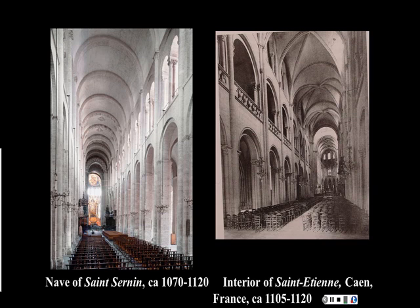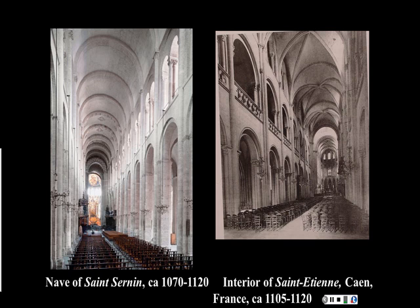An easy way to identify a Romanesque church is to look for rounded arch forms throughout. Similarly to Saint-Sernin, we get a processional quality. This vaulting is called a six-partite vault, with groined vaults forming individual bays. These are extraordinary technical innovations made possible by the know-how of masons who could create very complicated vaulting systems with stone alone.